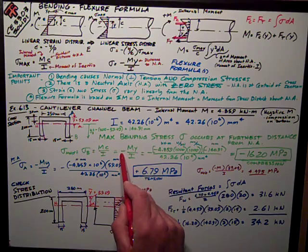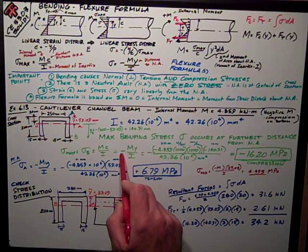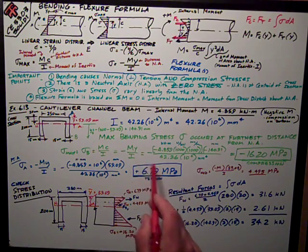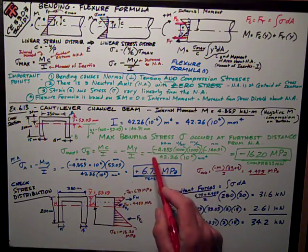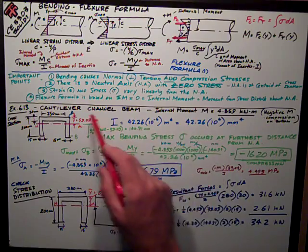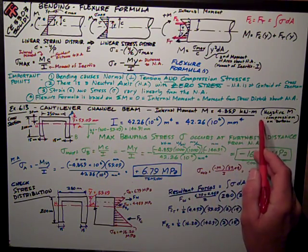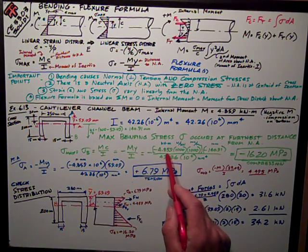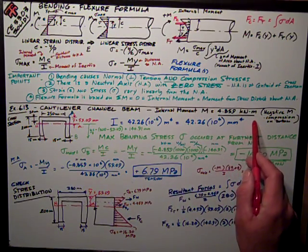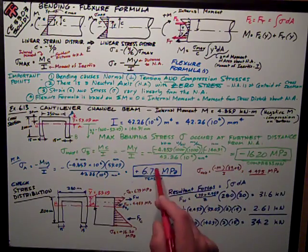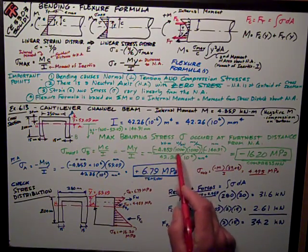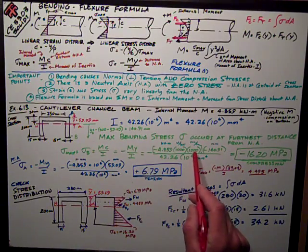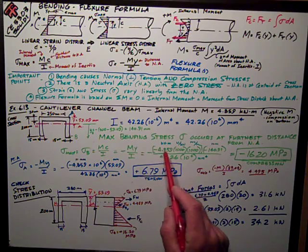Sigma max is equal to sigma at B is mc over I, where C is the furthest distance. Then, I need to introduce my sign convention, negative sign. So, I have a negative M-Y over I. In this case, I determined it's a cantilever. My internal moment is a negative moment. So, it's negative 4.859. The book gives the answer in kilonewton meters, which is fine. We'll just convert it to newton millimeters, which I've done with this thousand and this thousand.